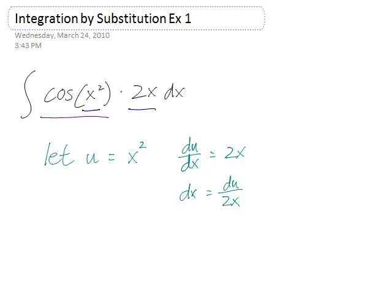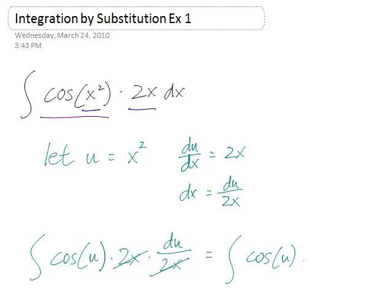So now we have the integral of cosine x squared becomes u times 2x. And now dx, because x is no longer our variable, we want to turn that into du. We use this little expression we have here. dx would be du over 2x. The 2x's cancel out. This is equal to the integral of cosine u du.